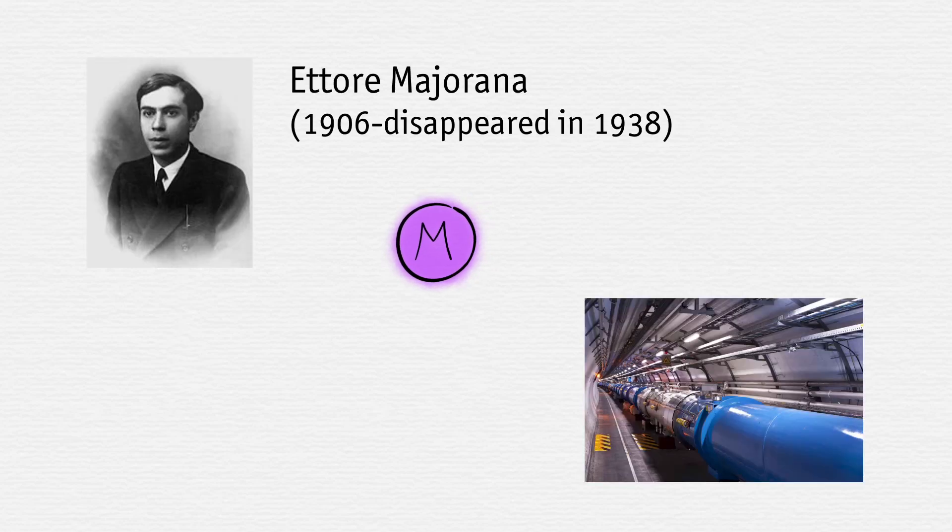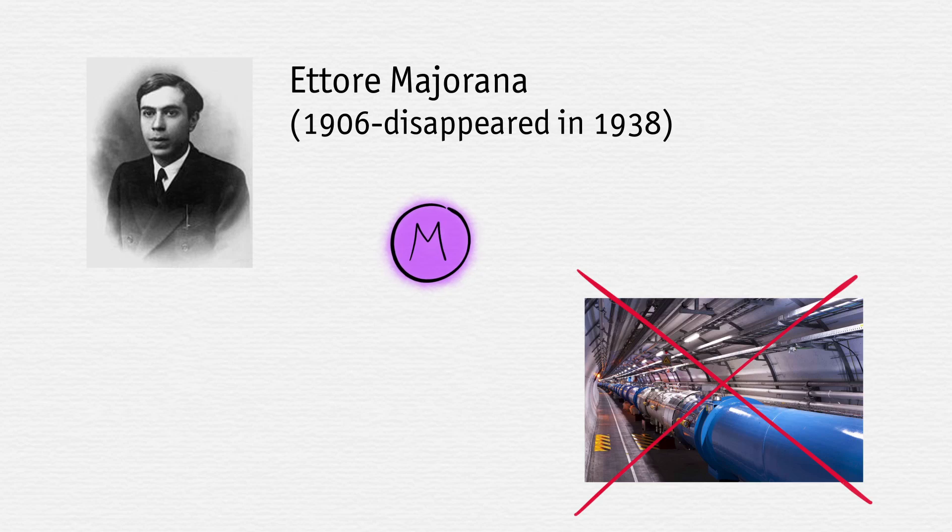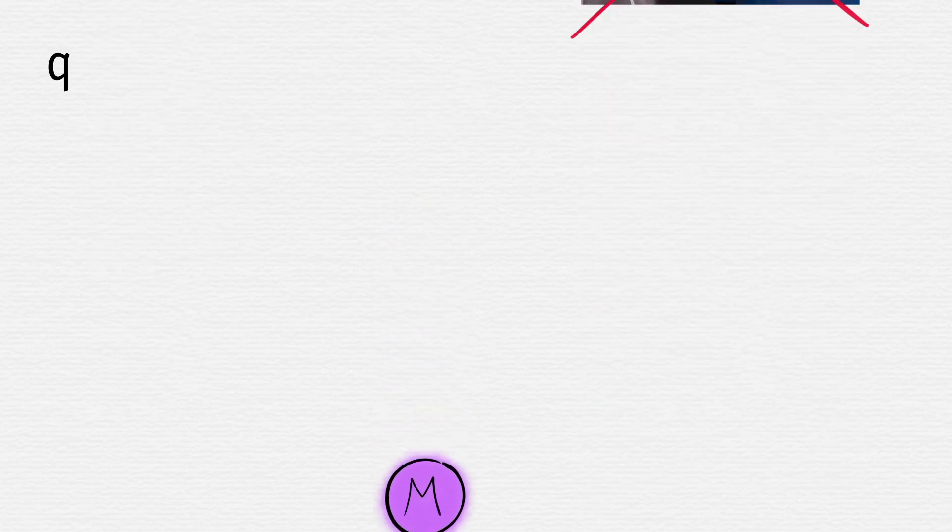The Majorana was predicted to exist in 1937 by the Italian theoretical physicist Ettore Majorana. There is no Majorana among the elementary particles like electrons and quarks, but in 2010 it was predicted that they could be created as quasi-particles.